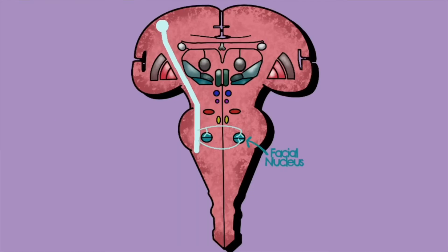This is important for pathology: when we have a lesion of the upper motor neuron, we get implications for the contralateral lower face. This is something we notice in stroke, where we look for a sagging of the side of the mouth and possibly saliva dripping from the corner of the mouth.